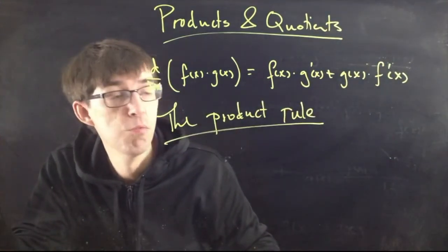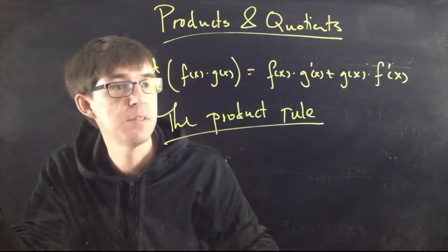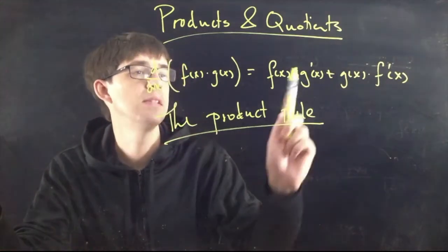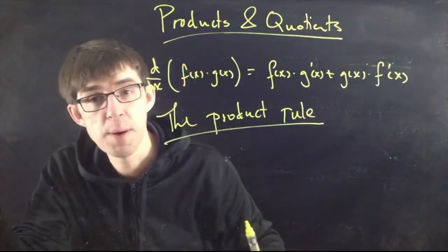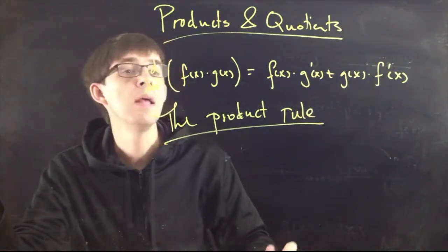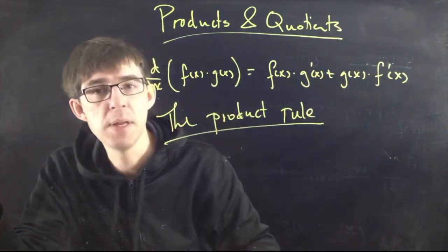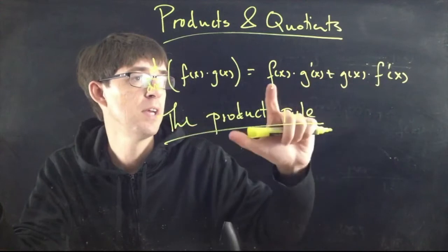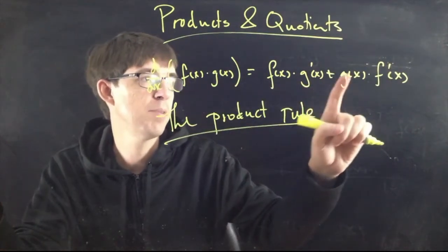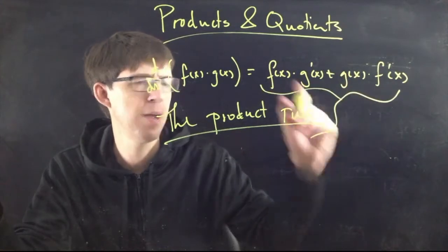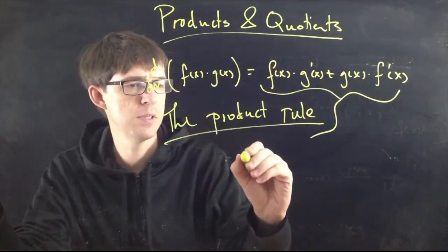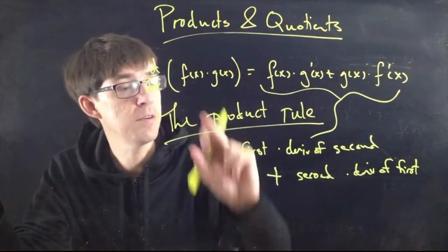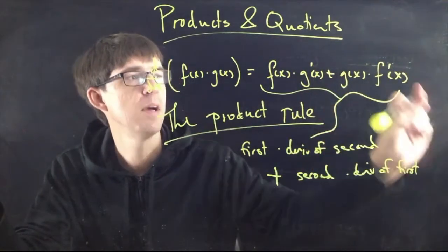This is called the product rule. It's a rule that tells you how to find the derivative of a product. It says: the derivative of f(x)·g(x) is f(x)·g′(x) + g(x)·f′(x). There's a nice symmetry to it. Think of it as: the first thing times the derivative of the second thing, plus the second thing times the derivative of the first thing. That's how I remember the product rule in my head.